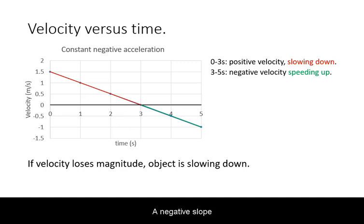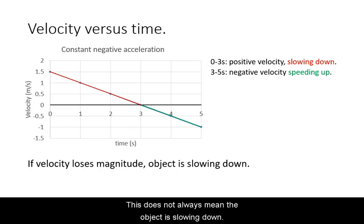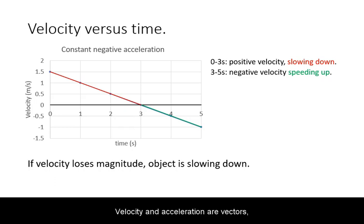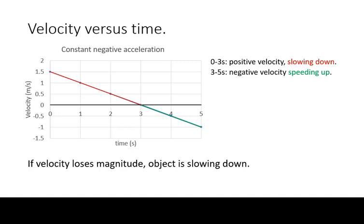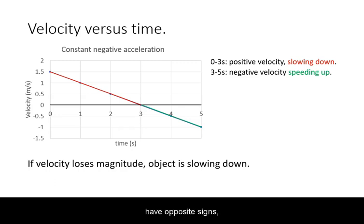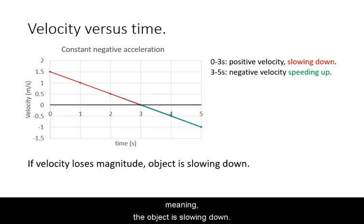A negative slope on a velocity graph means a negative acceleration. This does not always mean the object is slowing down. Velocity and acceleration are vectors, and the negative sign just means a direction. If both velocity and acceleration are in the same direction, then the object is speeding up — the velocity gains magnitude. If the velocity and acceleration have opposite signs, then the velocity will lose magnitude, meaning the object is slowing down.